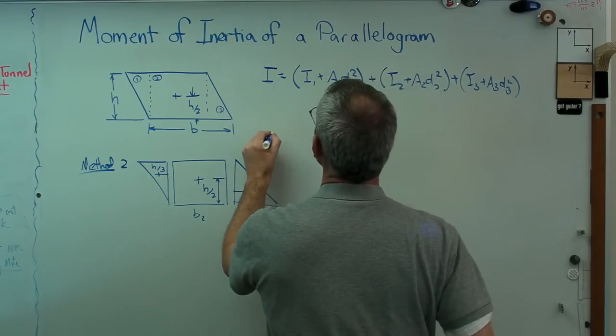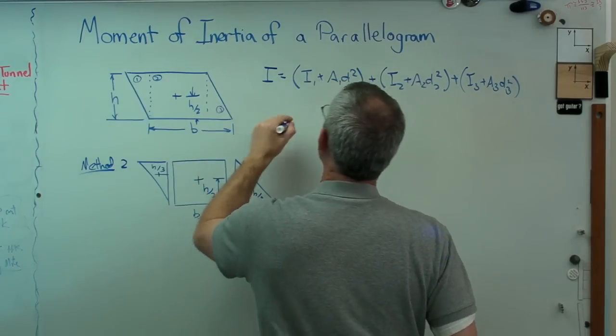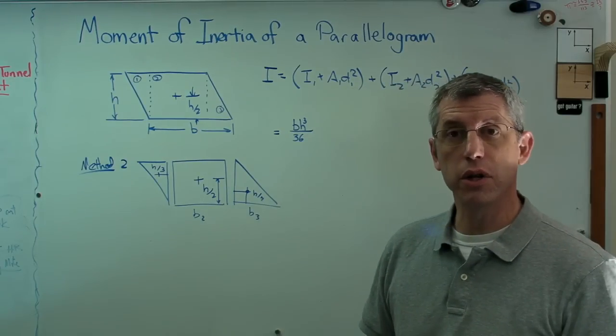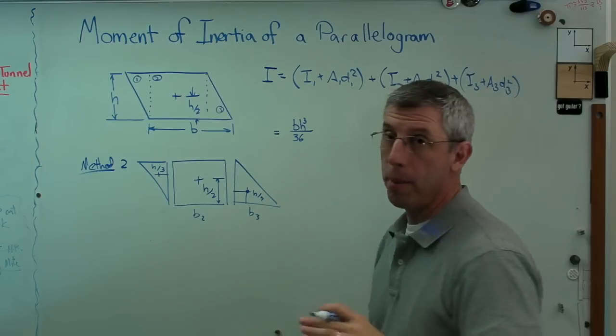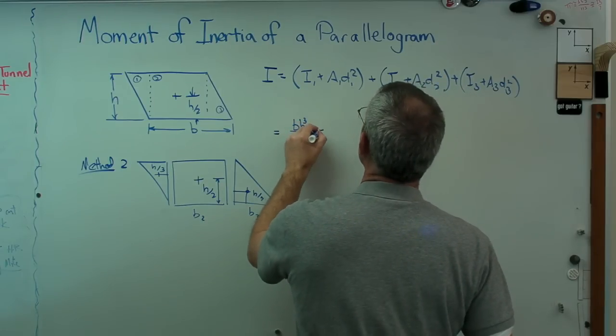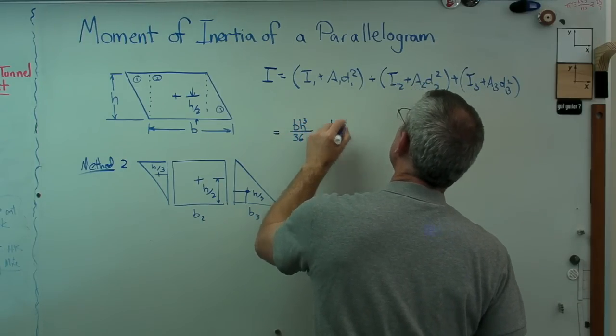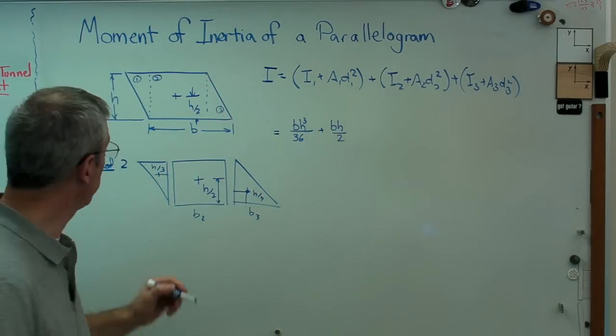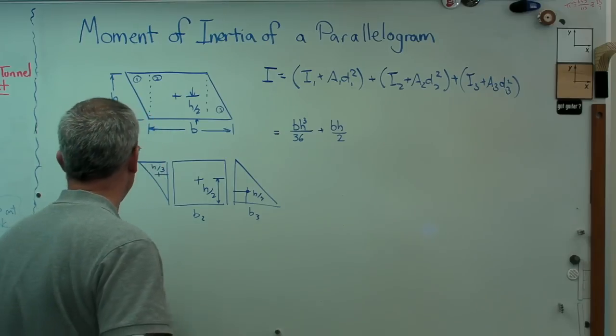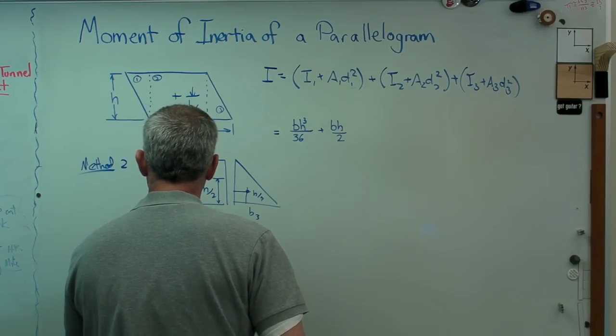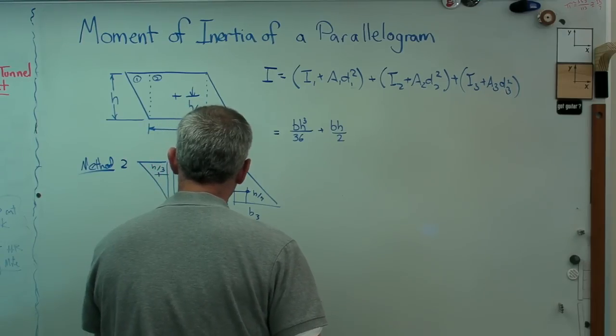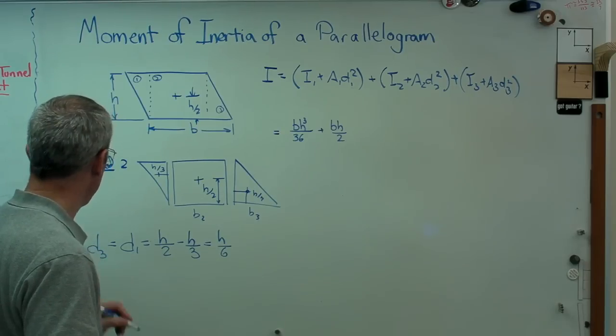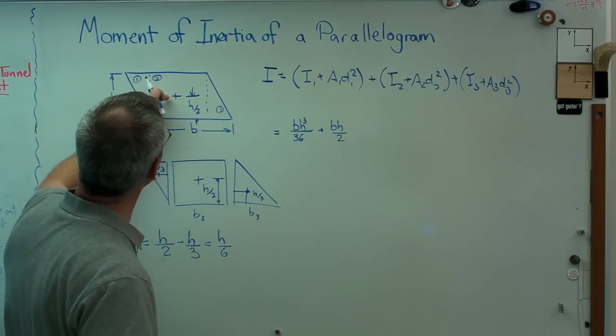That's okay, let's just do this. I1, if you look this up, is bh cubed over 36 - that's the area moment of inertia for a triangle about its centroid. That's an important distinction. Plus, well that's bh over 2 is the area. Now d1, well d1 is the distance from h over 2 to h over 3. If I say h over, let's just draw this here: d1 equals h over 2 minus h over 3, and that better be h over 6 last I checked.